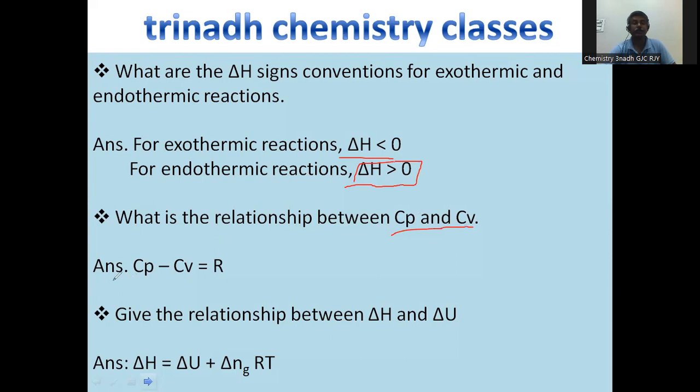Next: what is the relationship between Cp and Cv? Cp minus Cv is equal to R. Cp is the heat capacity at constant pressure; Cv is the heat capacity at constant volume.